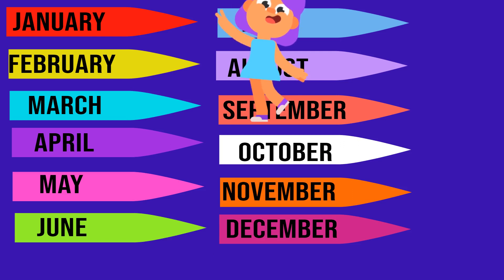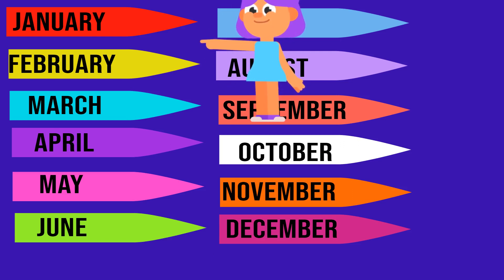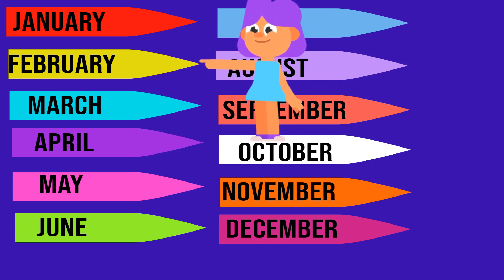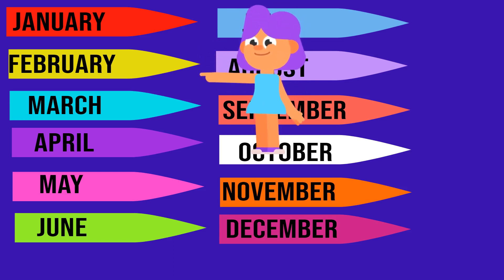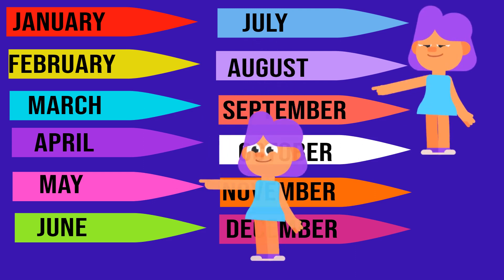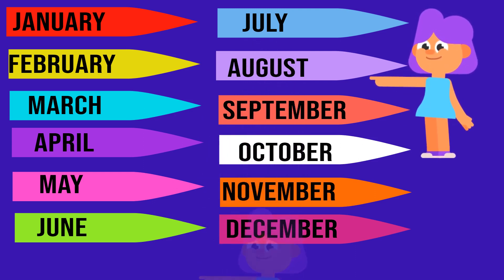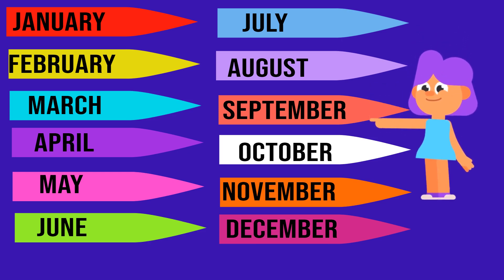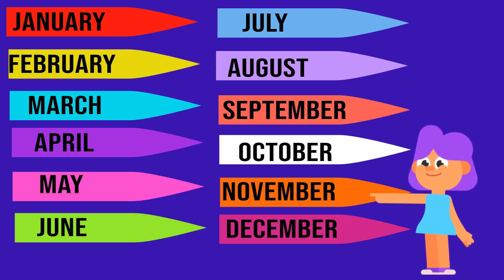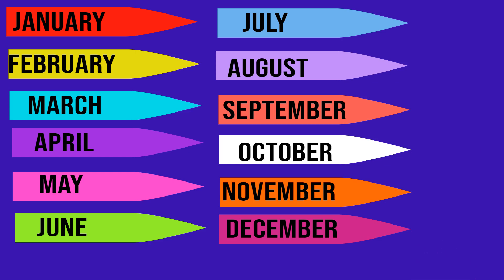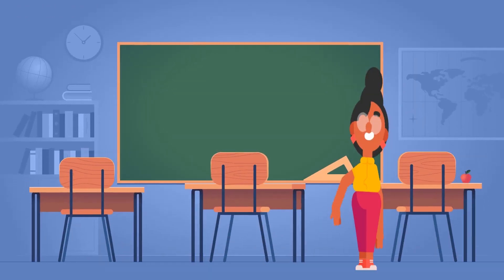Alright, now let's try to sing it. January, February, March, and April, May, June, July, and August, September, October, November, and December. These are the 12 months of the year.